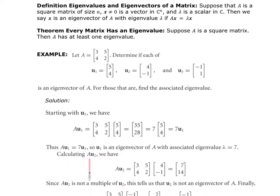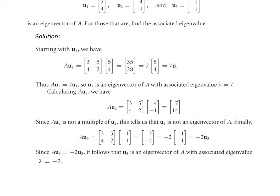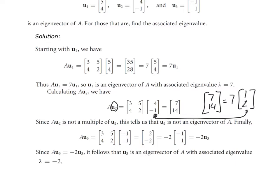Next we calculate whether U2 is an eigenvector. We take matrix A and multiply it by the second vector, getting 7 and 14. Factoring out a 7 gives 1 and 2, but that is not equal to the original vector U2. So U2 is not an eigenvector associated to A.